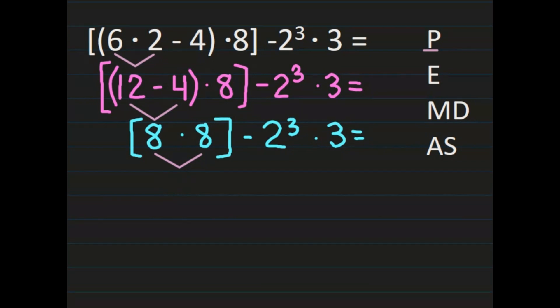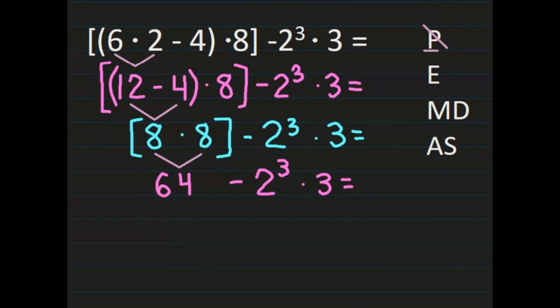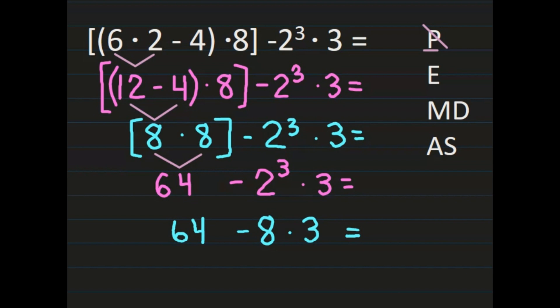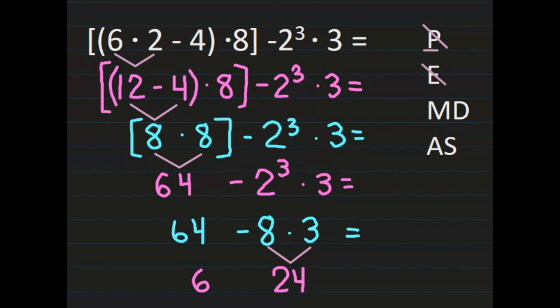8 times 8 is 64. Bringing the rest of my problem down: 64 minus 2 to the 3rd power times 3. That takes care of my grouping symbols. Now I'm looking at exponents — I have 2 to the 3rd power, which is 2 times 2 times 2. 2 times 2 is 4, times 2 more is 8. So 2 to the 3rd power equals 8. No more exponents, so I'm on multiplication and division: 8 times 3 is 24. I am subtracting 24, so 64 minus 24 is 40.